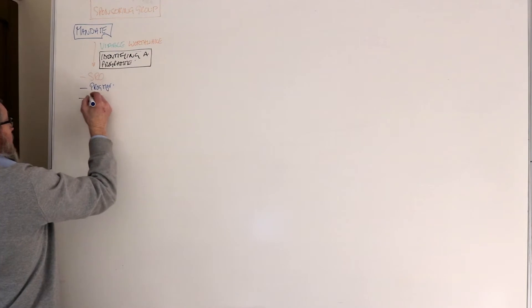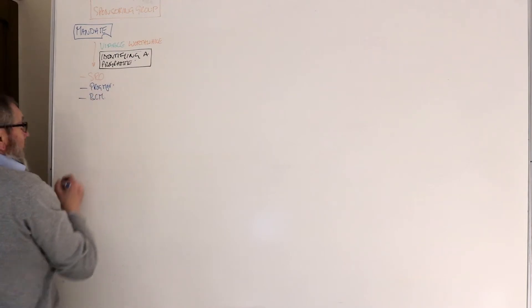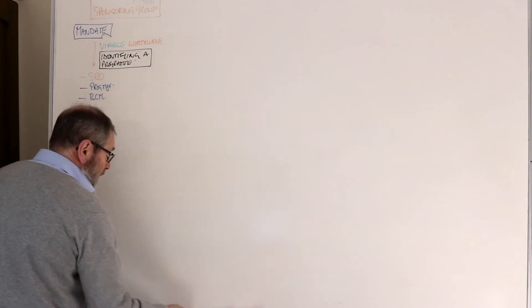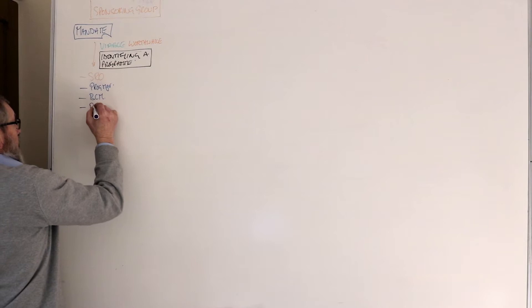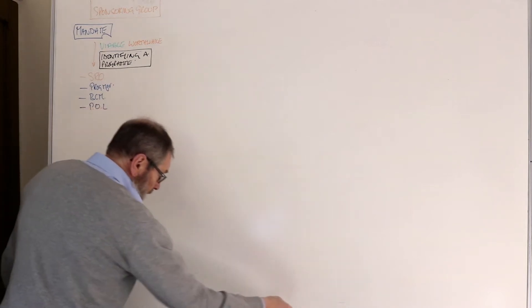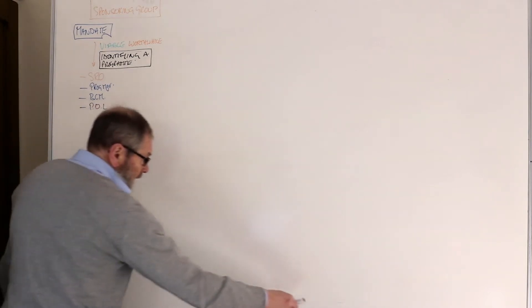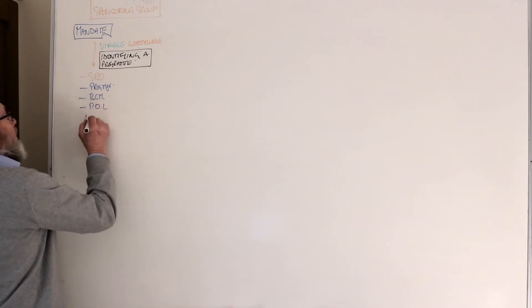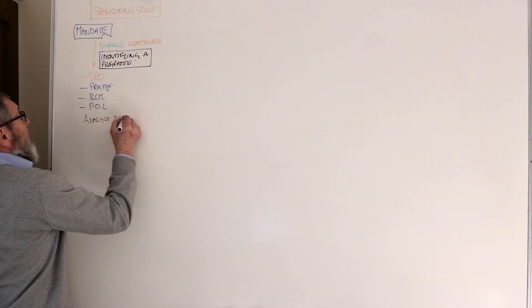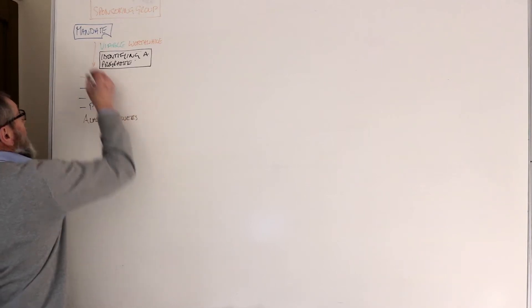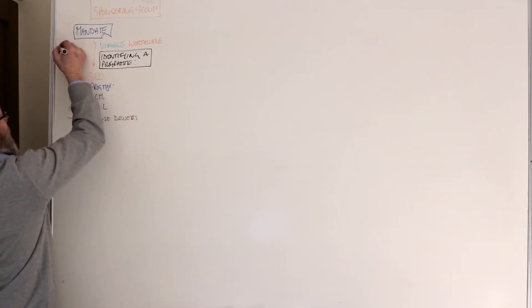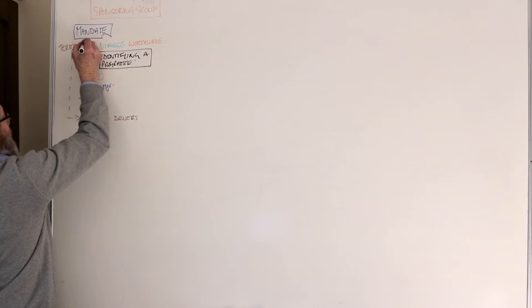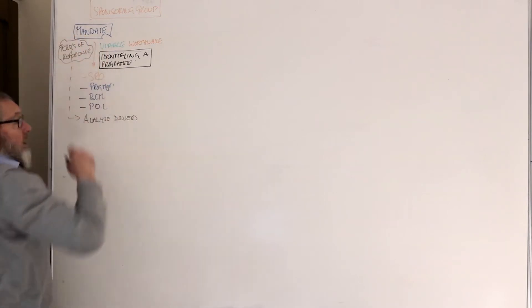You may also have the business change manager (BCM) and the program office lead (POL) if you've got the organization already up and running. The main activity here is to analyze the drivers for the program — to understand what the program is actually about. Most of this information will come from the mandate, from what they call the terms of reference, and we take that information and make some of the formal documents.